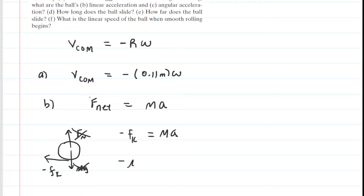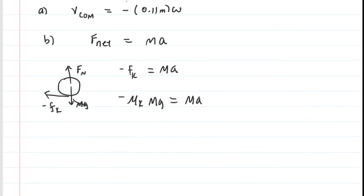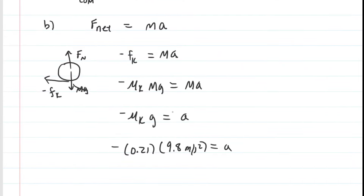Fk, by definition, is equal to the coefficient of kinetic friction multiplied by the normal force. Since the normal force has equal magnitude to the gravitational force, we can replace it with mg. So we have negative mu-k times mg equals Ma. The masses on both sides cancel out, giving us negative mu-k times g equals the linear acceleration. The coefficient of kinetic friction was given as 0.21, and gravitational acceleration is 9.8 meters per second squared, giving us approximately negative 2.1 meters per second squared — the answer to part B.